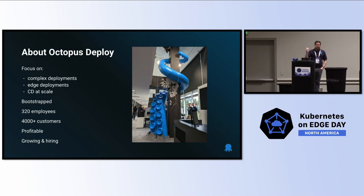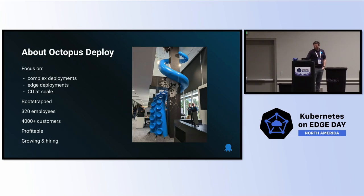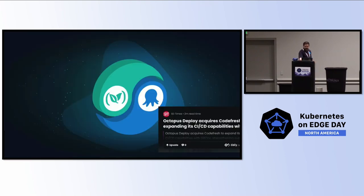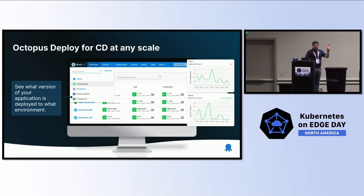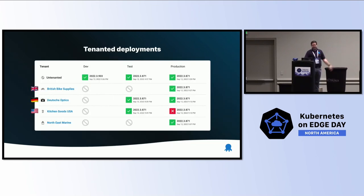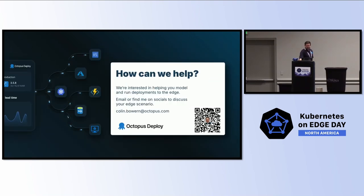Octopus Deploy does complex deployments. We've been around for 10 years, we're 300 people, and we came out of Australia but are heavily based around the world. We've acquired Codefresh, which is why we're here at KubeCon — not only have we been doing Kubernetes deployments, but we're now one of the main maintainers of Argo. We do CD at any scale, and we deal with this edge multi-tenant deployment problem really well. We'd love to help you. Thank you so much.